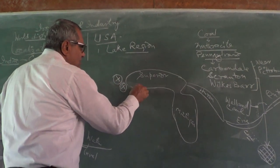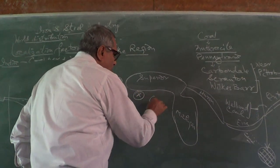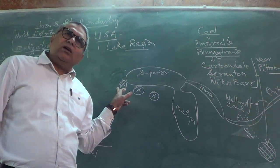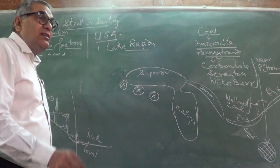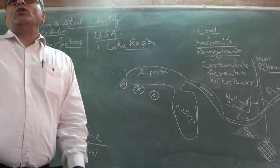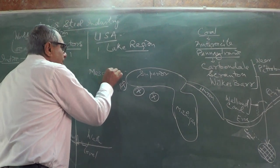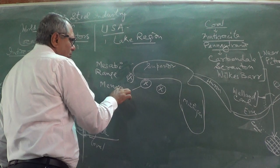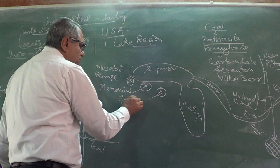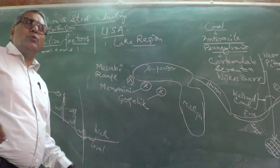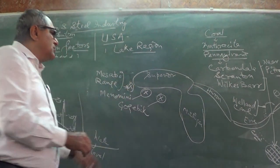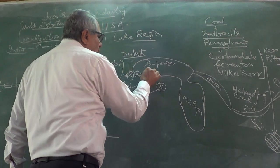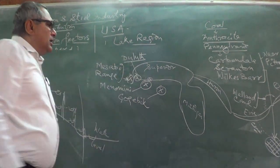There are four important iron ore deposits of the USA. The largest iron ore deposits are located south of Superior Lake — called the Mesabi Range. There is a port called Duluth and another called Superior.